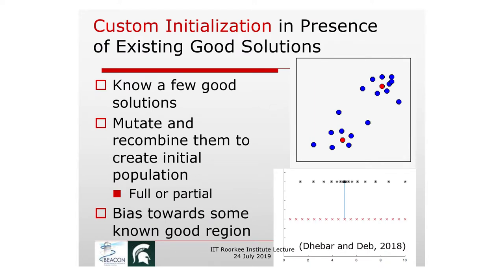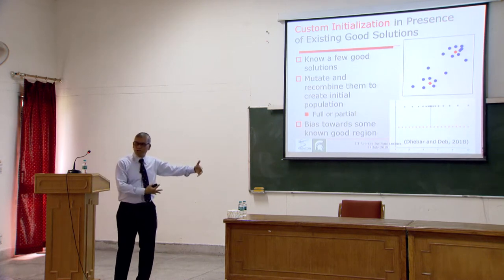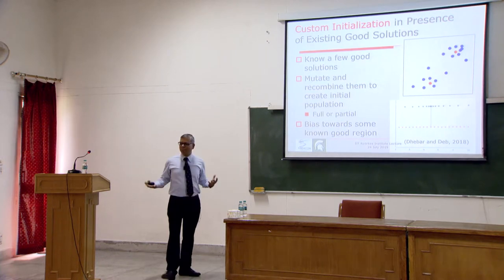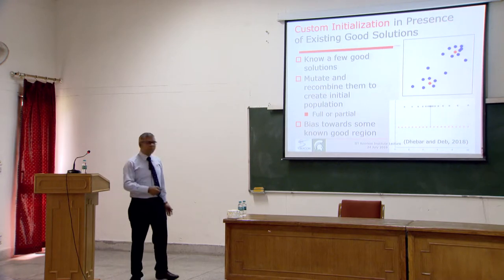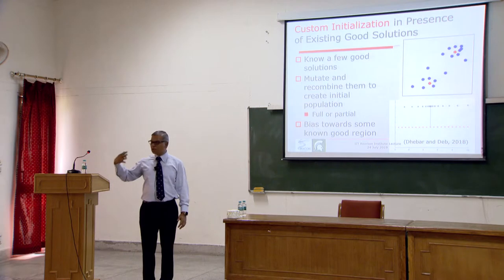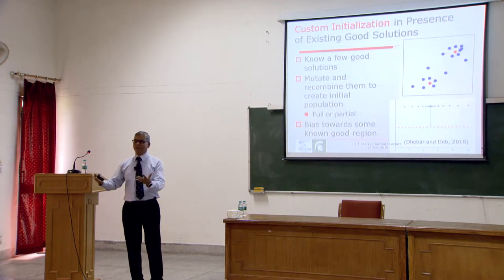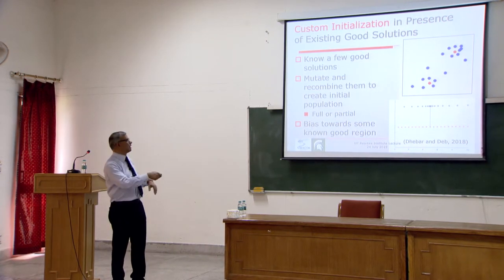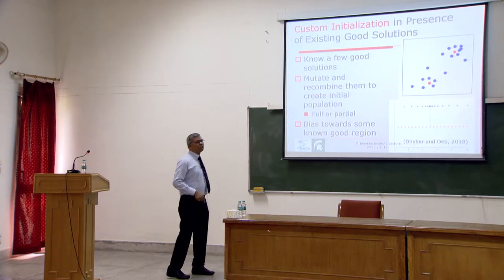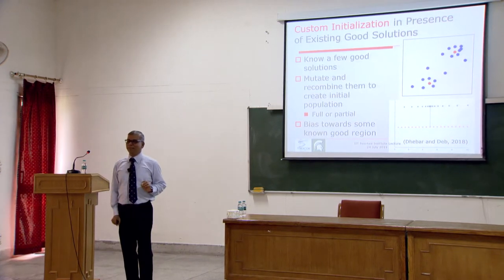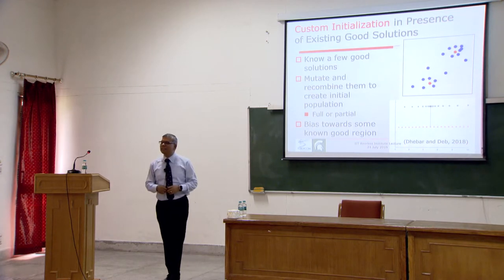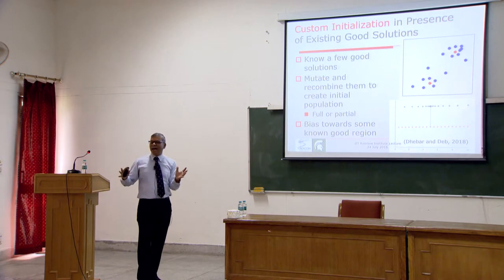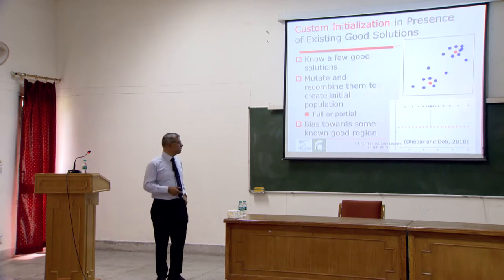There's no shame in using known good industry solutions as seeds — in industry, all they want is a good solution. If you help them get a better result, they'll give you another project. The difference between academic research and applied research is real: in academic work, we start from a random population to demonstrate algorithm properties; in applied research we use every advantage available. Methods like NSGA-2 and NSGA-3 are very generic; in some problems we can use them directly, but for practical problems we always need to customize.